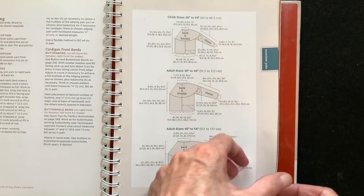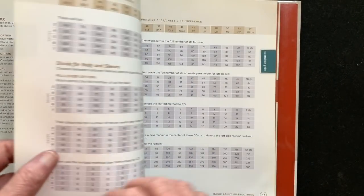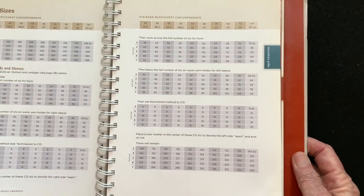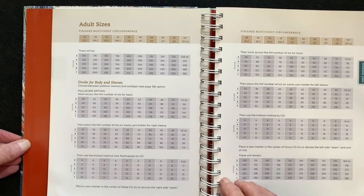I'm going to turn to the page where she discusses the total stitch count of the yoke prior to dividing for the body and sleeves because this is a yoke sweater.